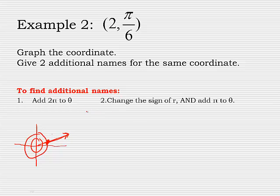Now to get a new coordinate, I'm going to take 2, pi over 6. And then I need to take that pi over 6 and add 2 pi. Common denominator is going to make that 12 pi over 6. So another name would be 2 and 13 pi over 6.